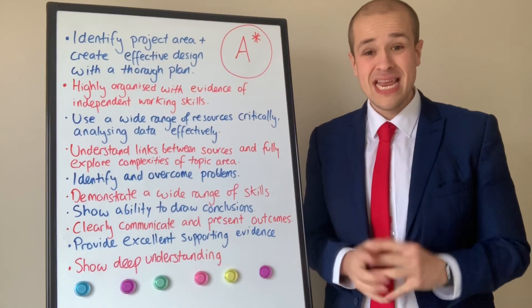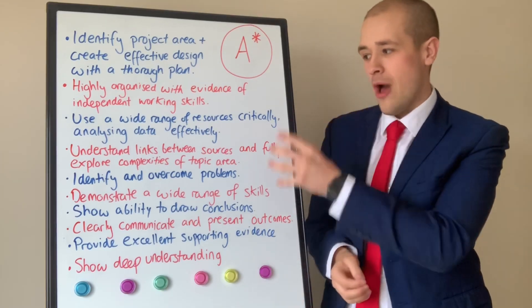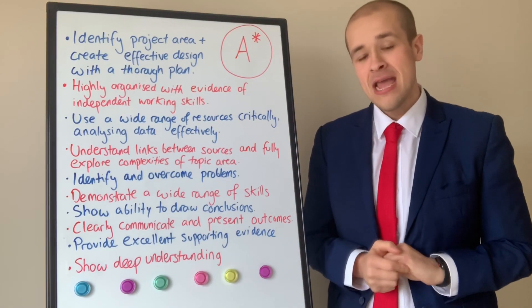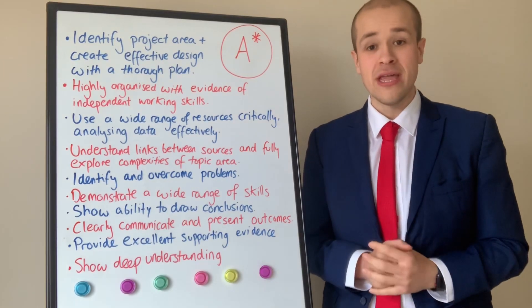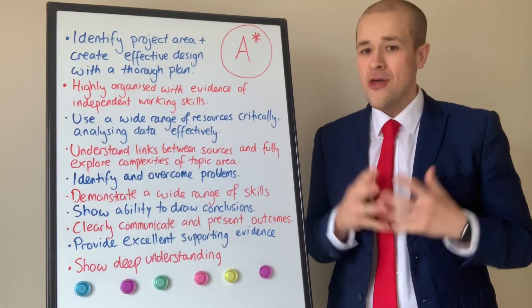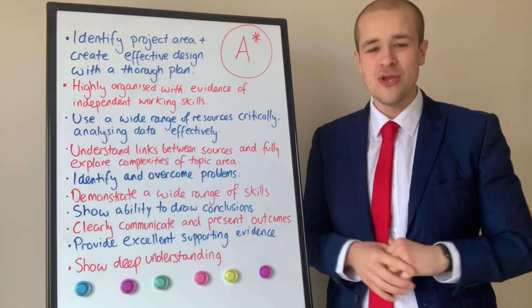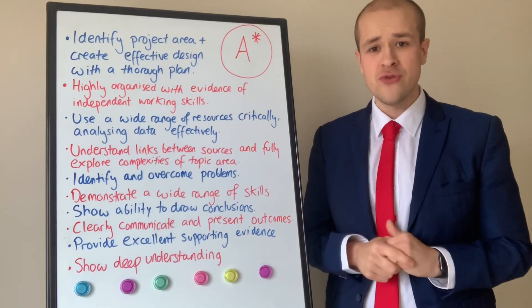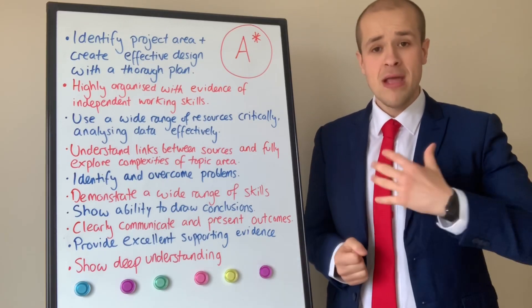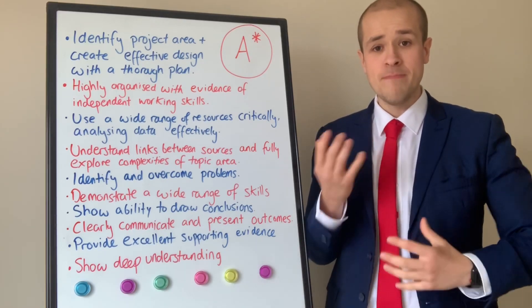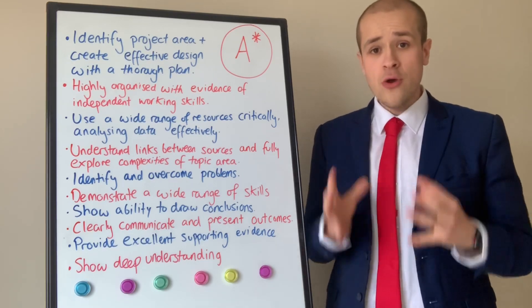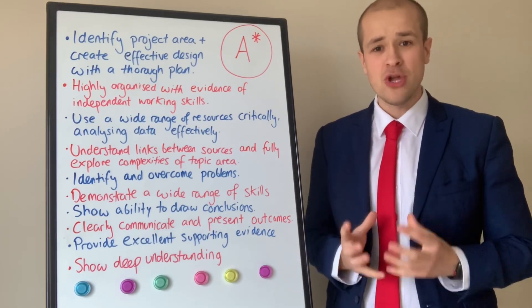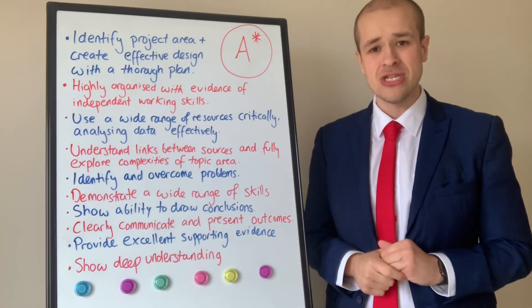The third thing AQA say an A-star student must do is use a wide range of resources critically and analyse data effectively. Just using the BBC website as your main referencing tool is not going to be effective or get you to level three. Students who use a wide range of resources — scientific journals, videos, articles from the web, books — are the ones who will have much better quality research and data to analyse in their written report.